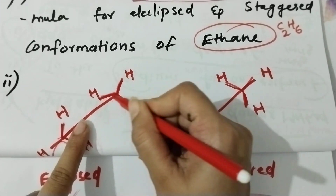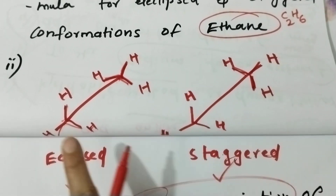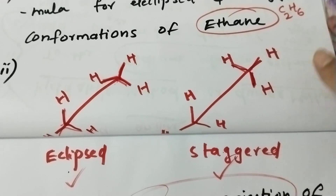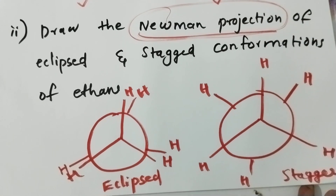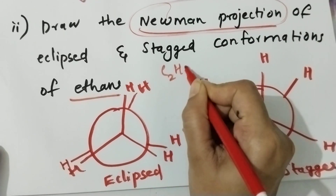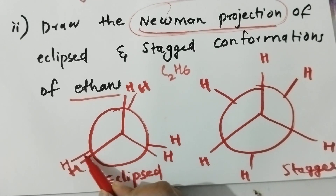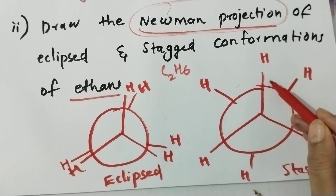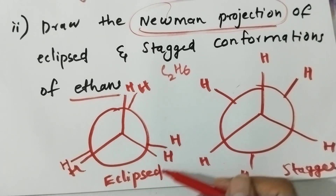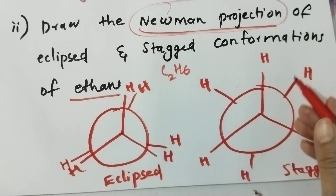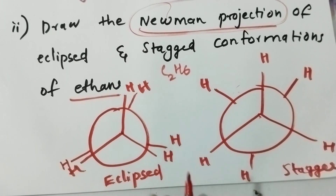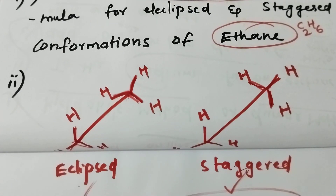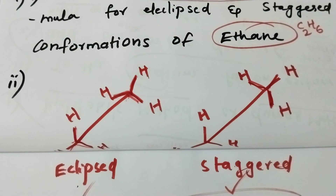The Newman projection of C2H6 shows staggered and eclipsed conformations. In the eclipsed conformation, the hydrogens are aligned. In the staggered conformation, hydrogens are at maximum distance from each other with 2 carbons – one in front and one in the back. This is the Sawhorse projection of eclipse to stagger. Today we covered 3 important lessons.